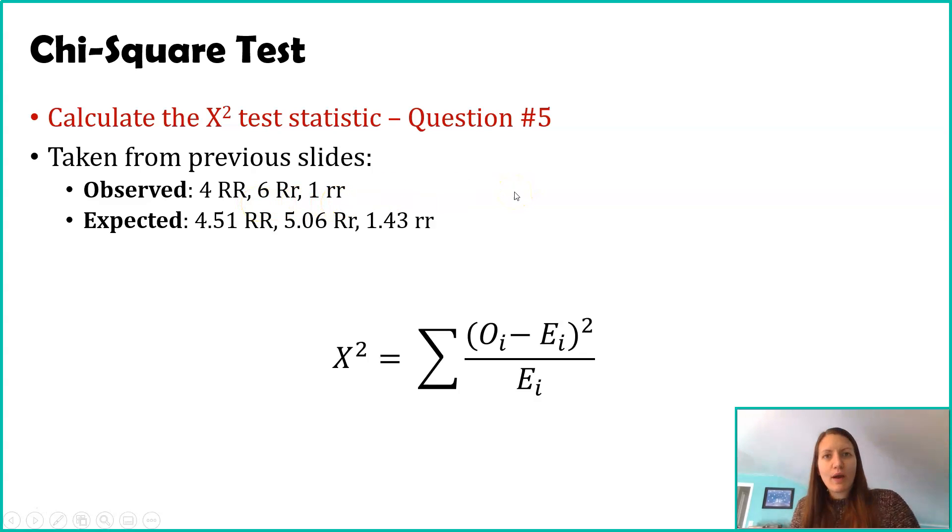When we use the Hardy-Weinberg equation to determine the genotype frequencies, we then converted those back to snails. And Hardy-Weinberg said we should have 4.5, 5.06, and 1.43 snails of each of those genotypes.